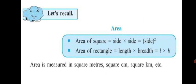Let's recall. Area of a square — you must remember this formula since you have already learned about it. Area of square is equal to side multiplied by side, which is equal to side squared. Area of rectangle is equal to length into breadth, equal to L into B. Area is always measured in square meters, square centimeters, square kilometers, etc. To solve Practice Set 45, we will be using the formula for area of square and area of rectangle.